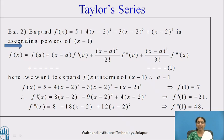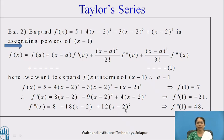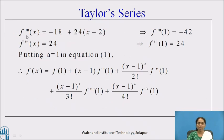Writing f(x) as the given expression and calculating successive derivatives: the first derivative f'(x) = 8(x−2) − 9(x−2)² + 4(x−2)³. The second derivative f''(x) = 8 − 18(x−2) + 12(x−2)². The third derivative f'''(x) = −18 + 24(x−2), and the fourth derivative f⁽⁴⁾(x) = 24, which is constant. All higher order derivatives are zero, so the expansion stops at order 4.